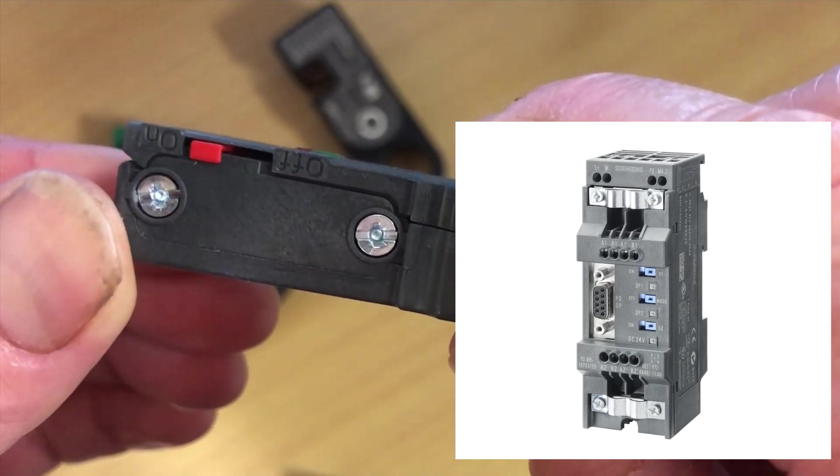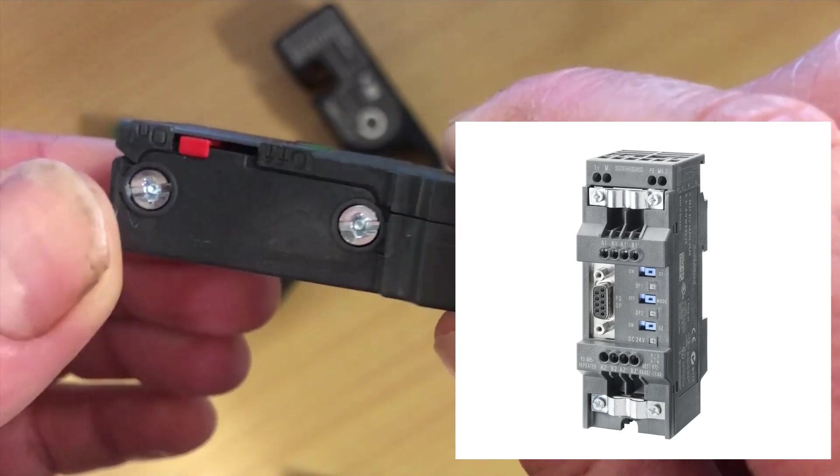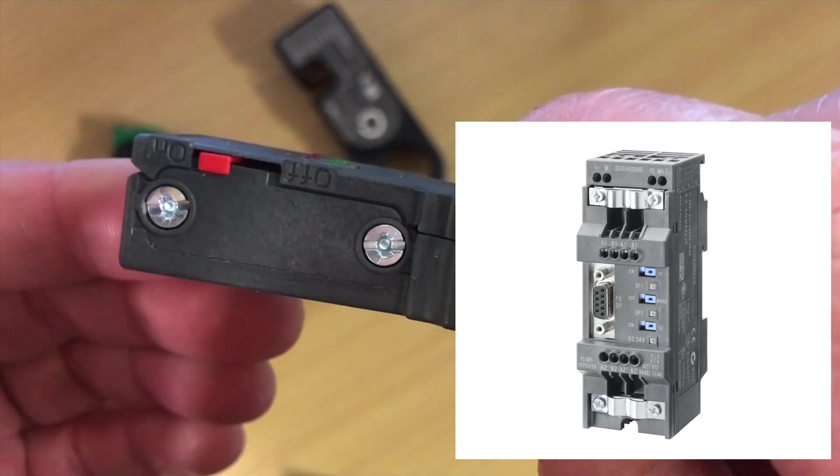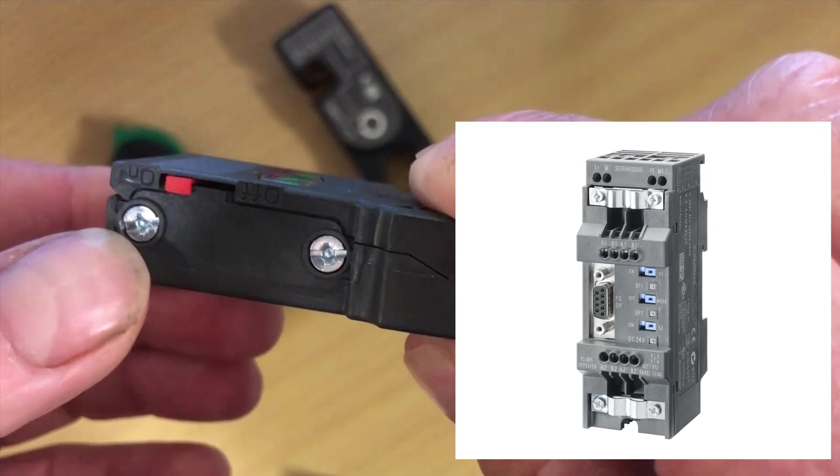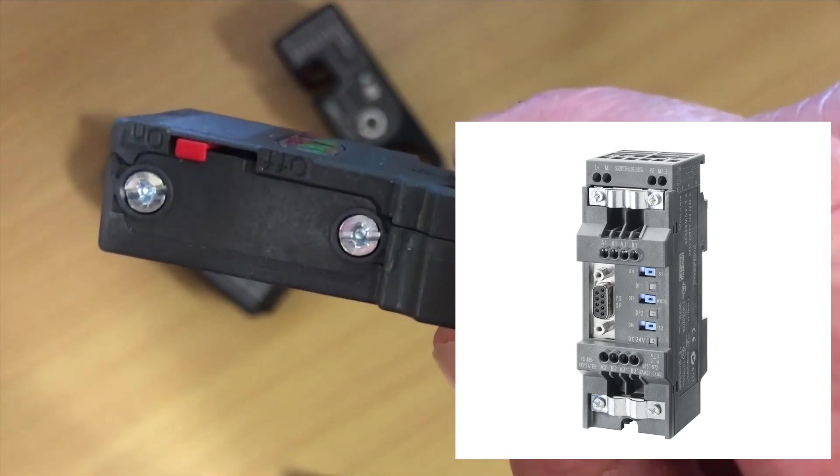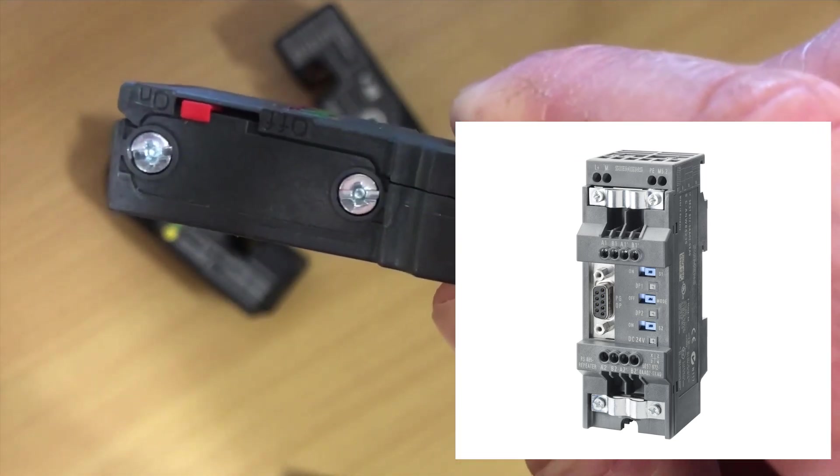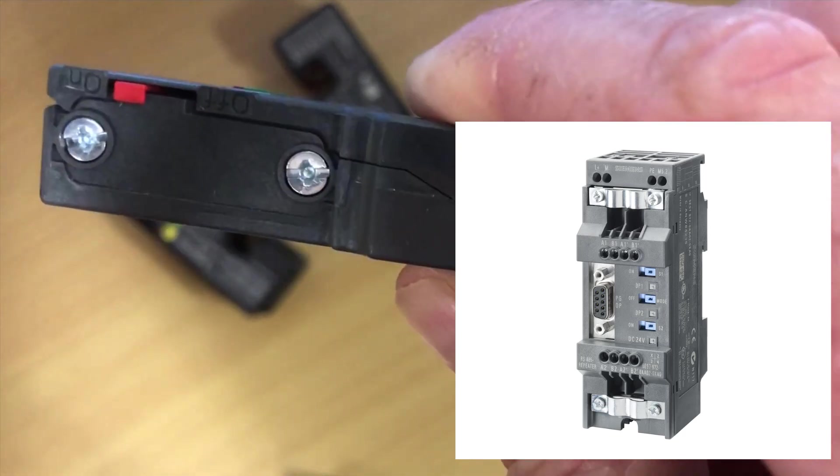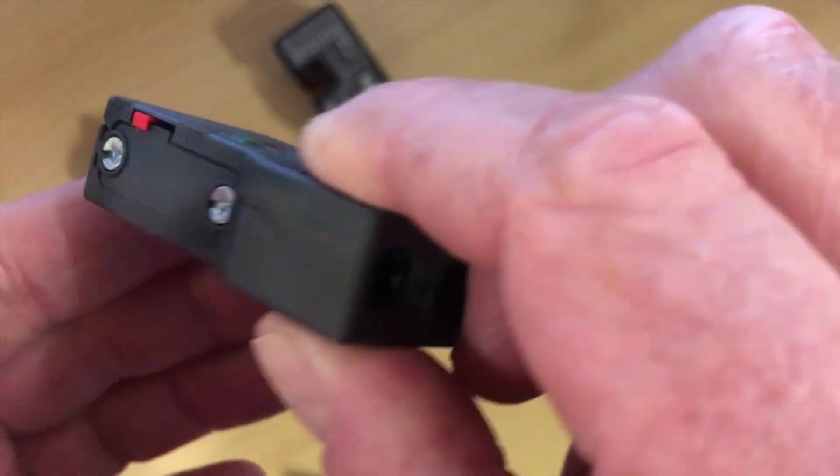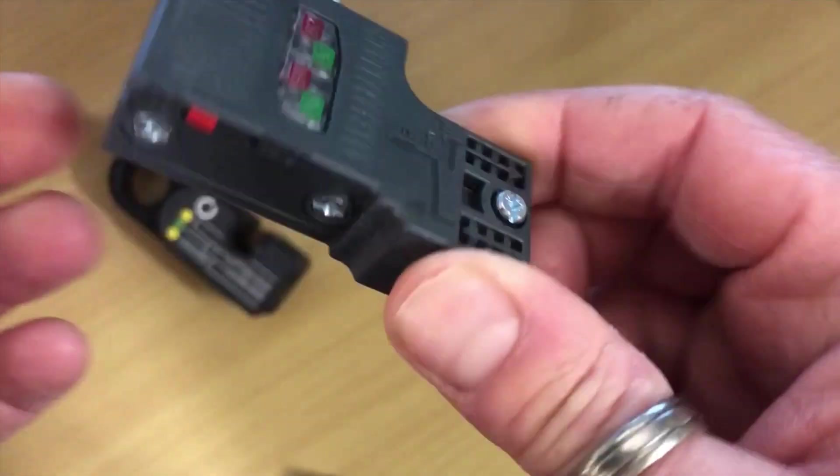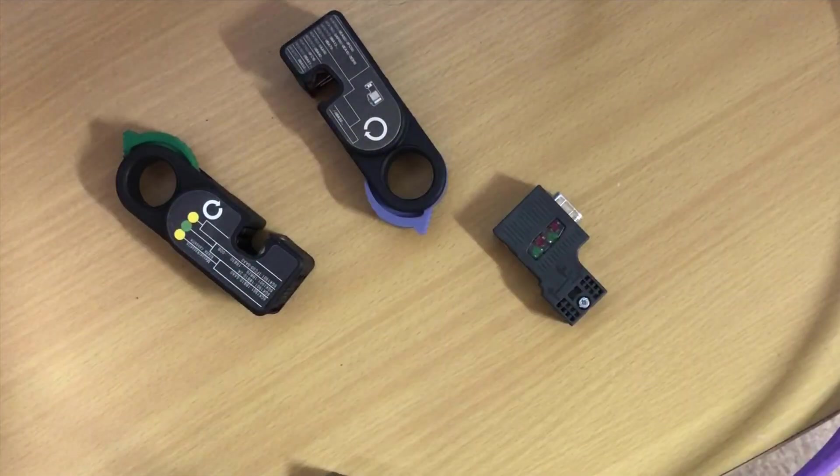And what that means is if you have bad cables connected to your programming device, it's not going to affect the rest of the network. If you just use a conventional piggyback connector and you have bad wiring, then when you connect your bad wiring to the network, you could just tip it over and you could be inducing the issues. So there we have the connectors.